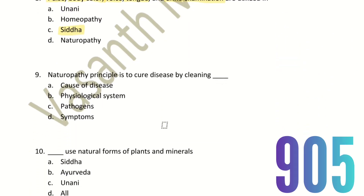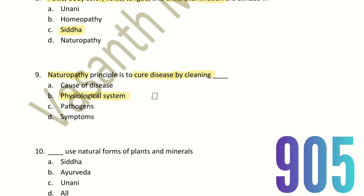Ninth question: Naturopathy's principle is to cure disease by cleaning what? Naturopathy is a system of medicine. The choices are cause of disease, physiological system, pathogens, and symptoms. Naturopathy is natural, so cause, pathogen, and symptoms are natural. Physiological system is not natural. Hence, the right answer relates to cause of disease — physiological system is excluded.